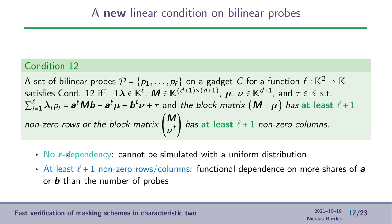We are going to state a slightly different condition that is the same as the previous one, but instead of saying that all the rows must be non-zero, here at least L plus one rows must be non-zero, or L plus one columns, where L is the number of probes on our set.